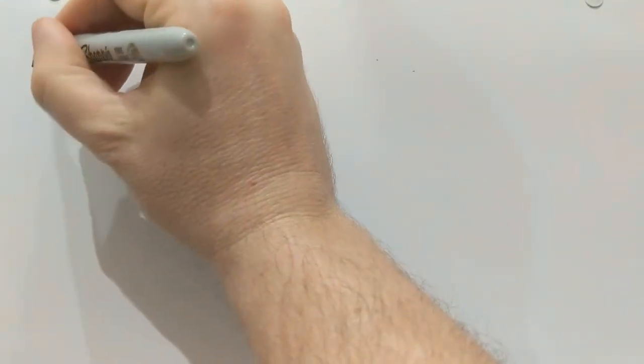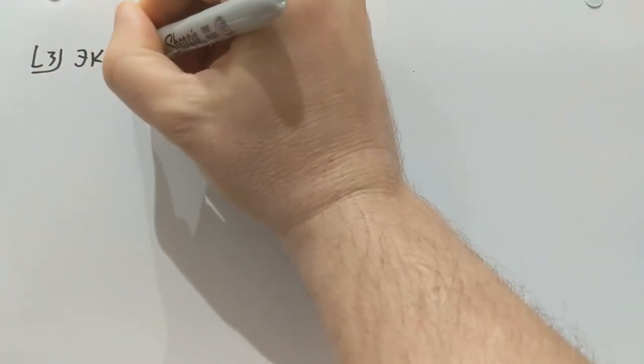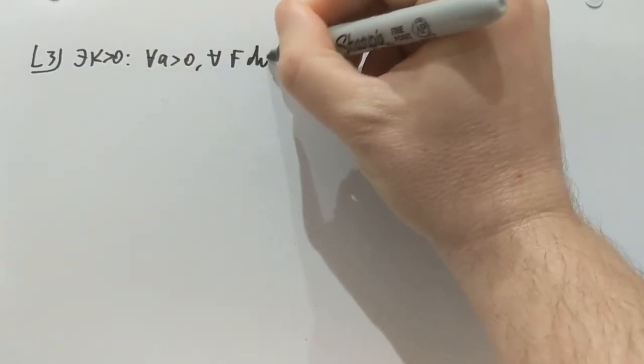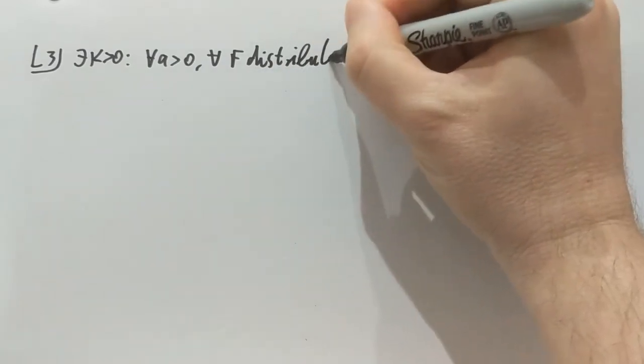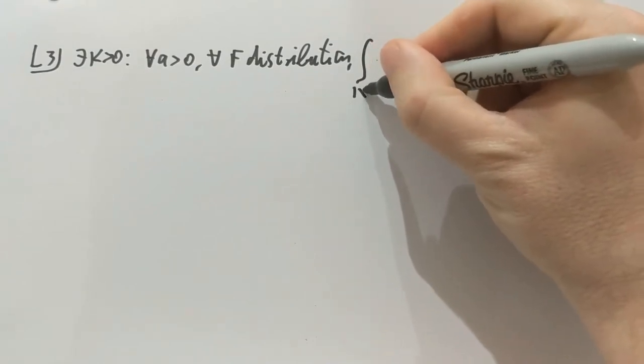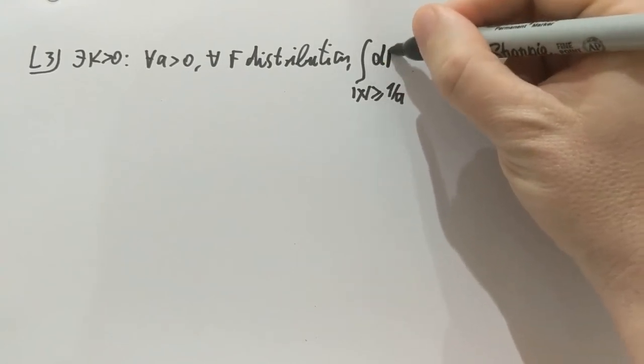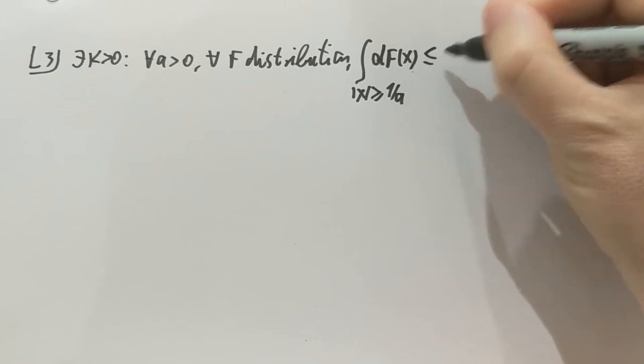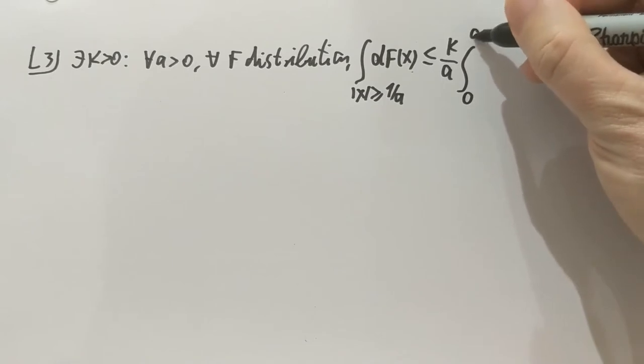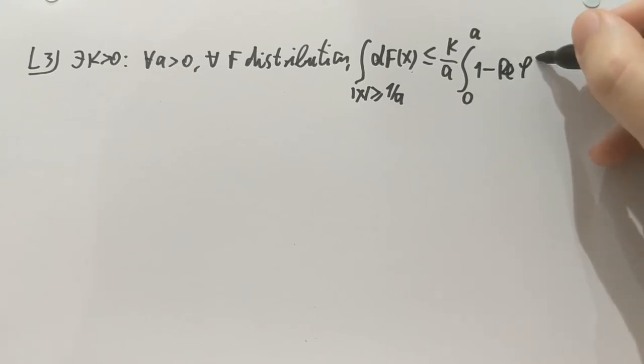Lemma 3: There exists a positive k such that for every positive a and every f distribution function, we have the following bound. The probability that x is greater than or equal to 1 over a is bounded from above by k over a times the integral from 0 to a of 1 minus the real part of the characteristic function integrated.